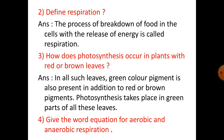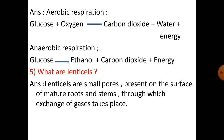Number three: How does photosynthesis occur in plants with red or brown leaves? In all such leaves, green color pigment is also present in addition to the red or brown pigment, and photosynthesis takes place in the green parts of all these leaves. Number four: Give the word equation for aerobic and anaerobic respiration. Aerobic respiration: glucose plus oxygen gives carbon dioxide plus water plus energy.